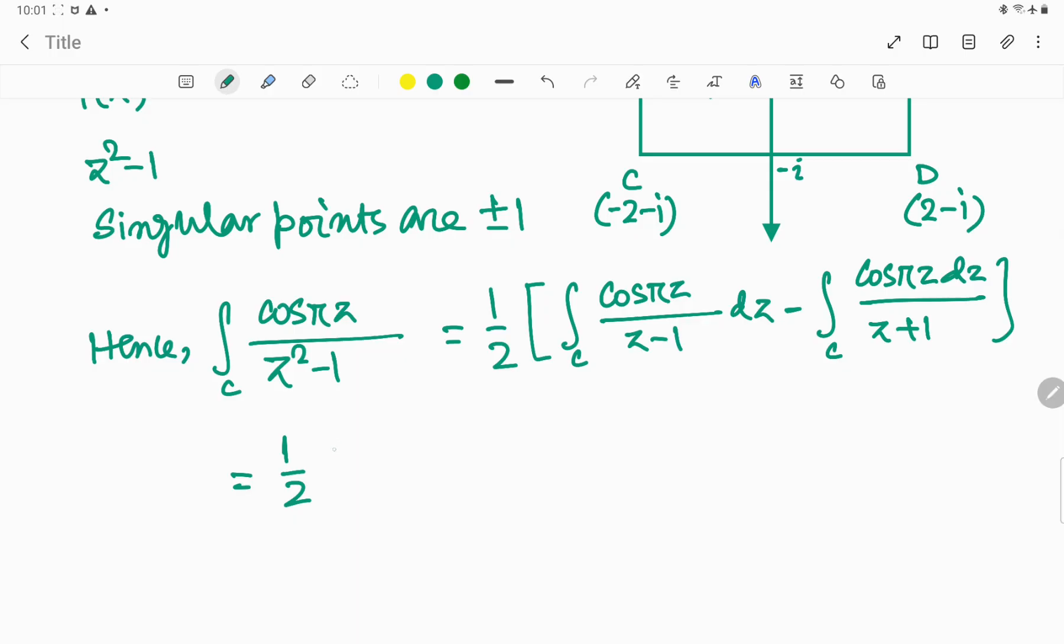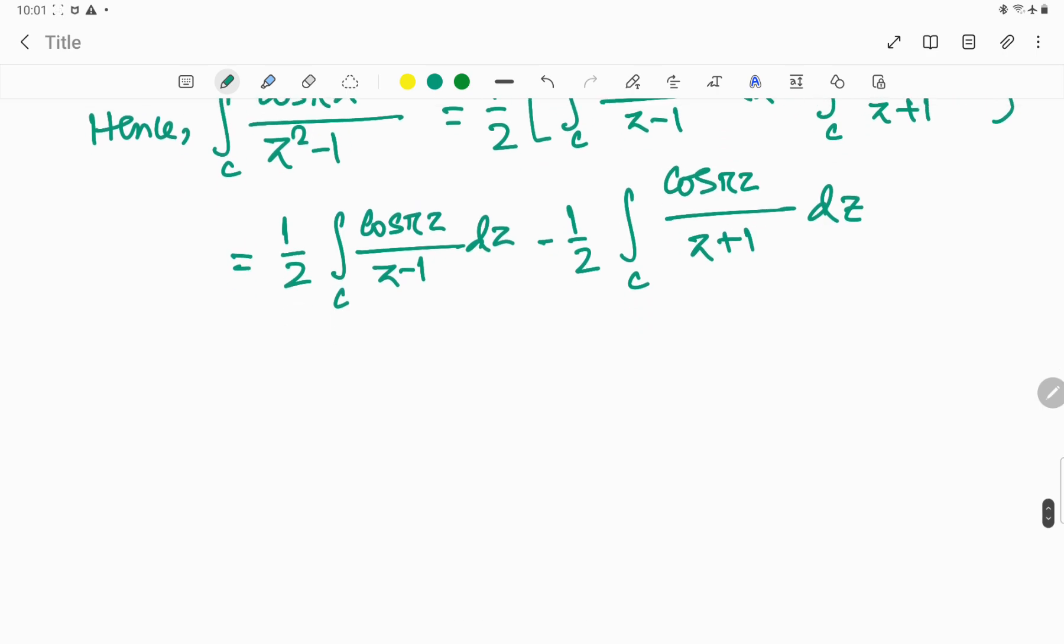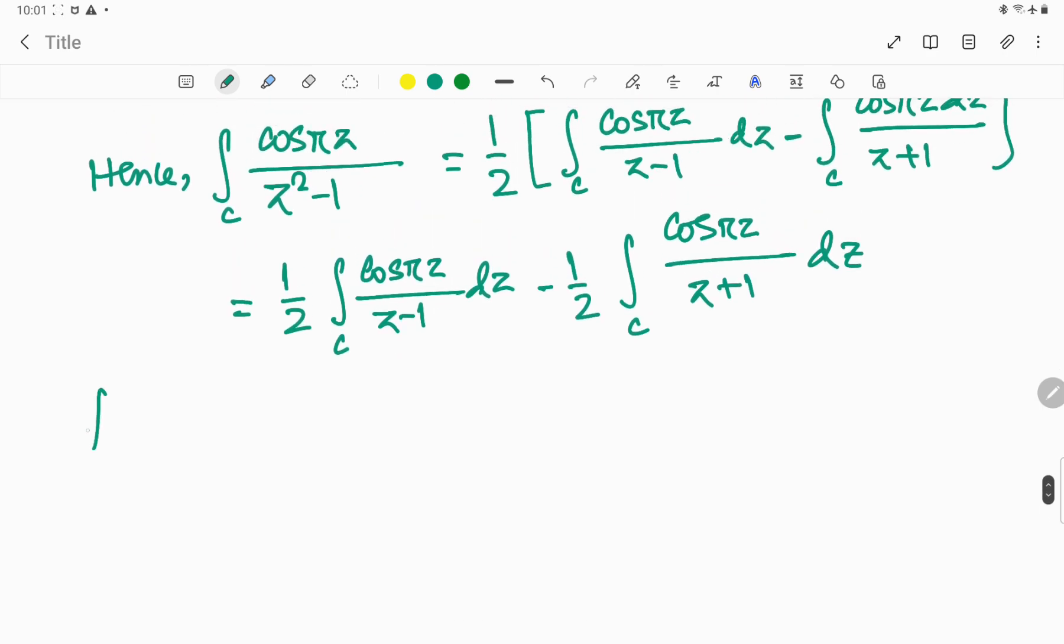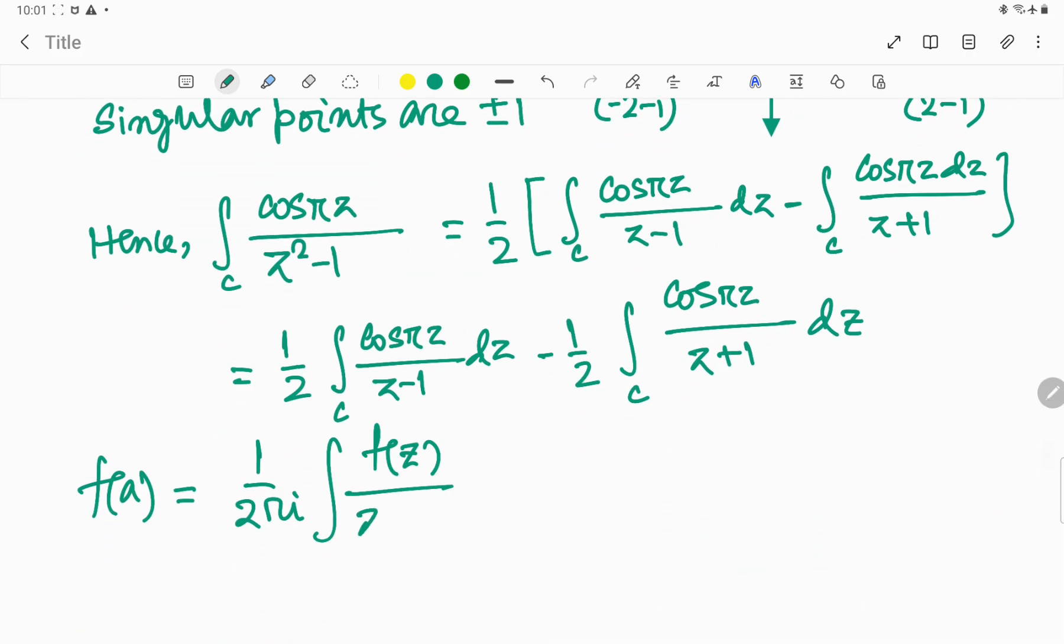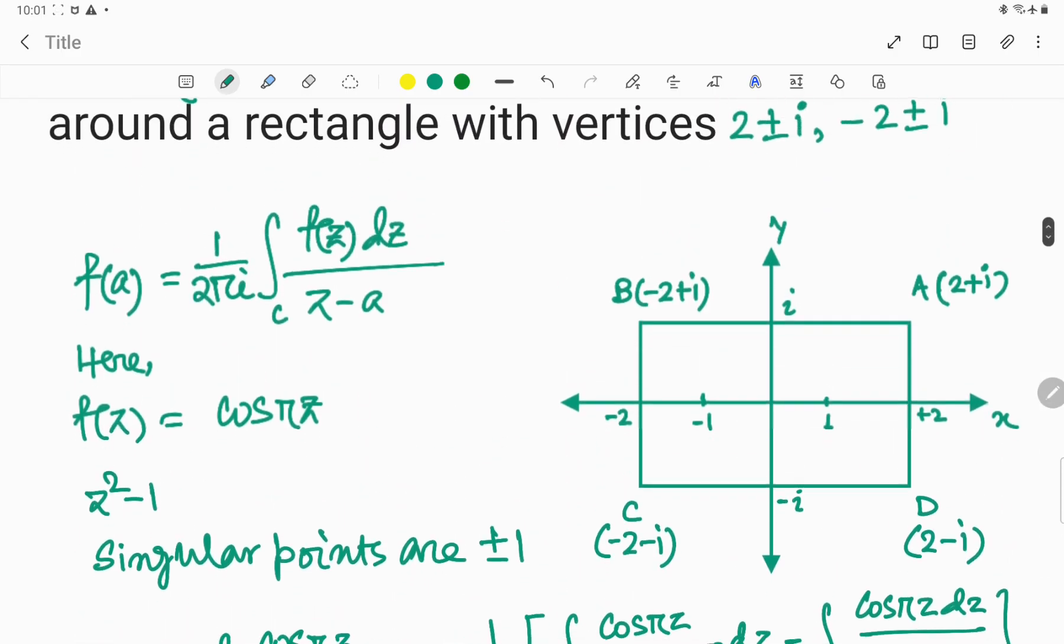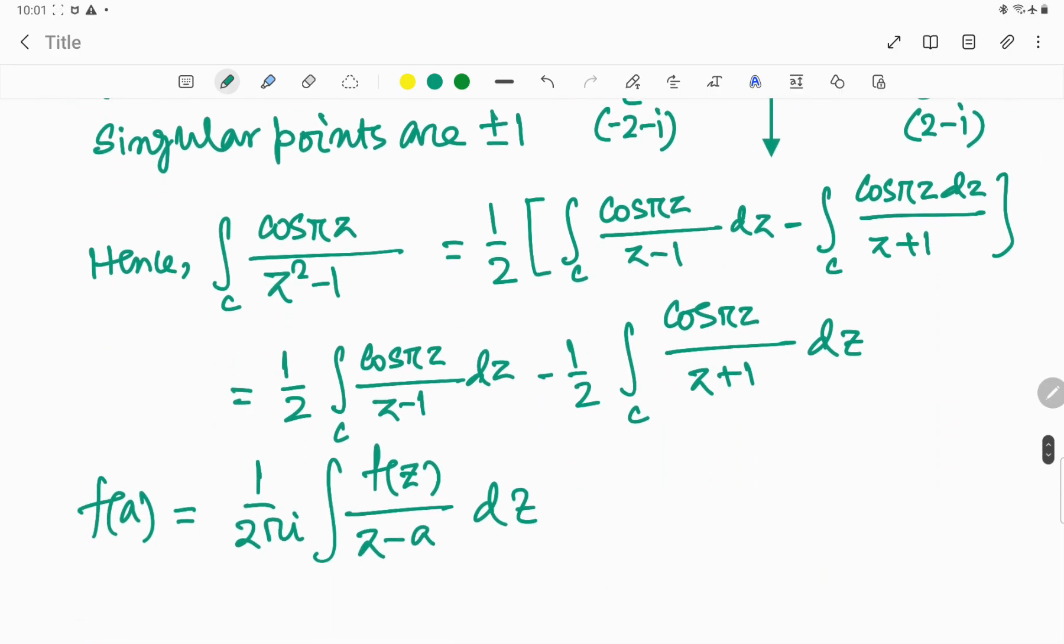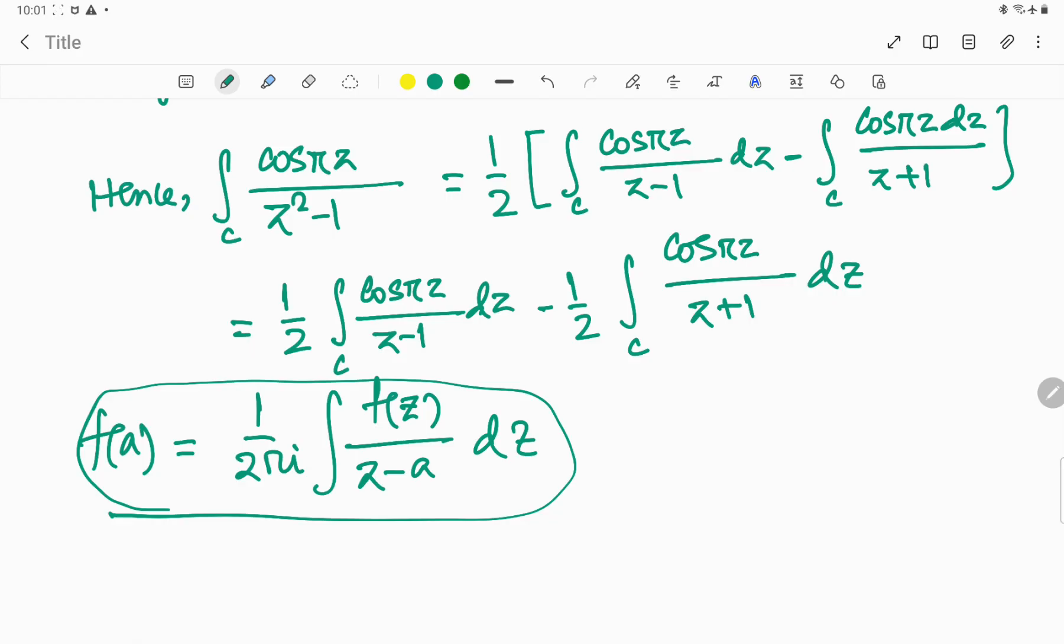We can write this function as the integral over C of cos(πz)/(z-1) dz. Now we write the value. Remember we already mentioned Cauchy's integral formula, so we are going to use this.